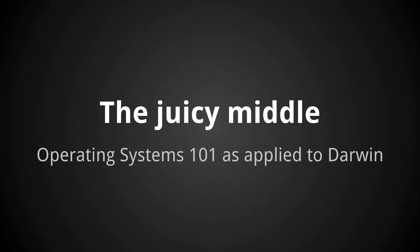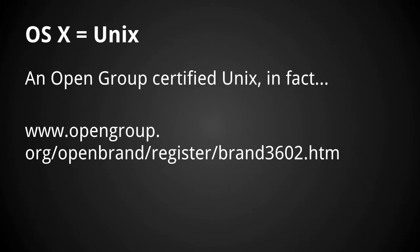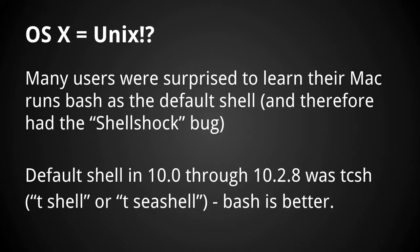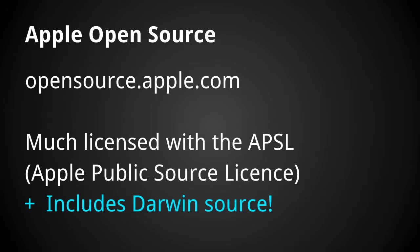Obscure trivia: I mentioned a lot about Unix and BSD in my abstract. OS X and iOS are Unixes — OS X in particular is an OpenGroup certified Unix. Many users were surprised that OS X is a Unix. In particular it runs Bash Shell, which had a recent vulnerability, but that's not Apple's problem. It's actually really smart of them to use existing technologies. And before Bash, they actually ran tcsh, which was on 10.0 to 10.2.8.